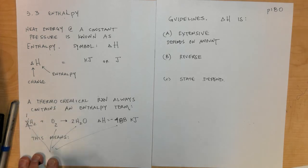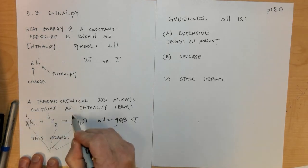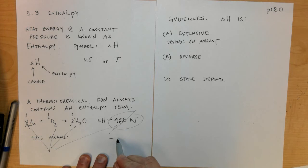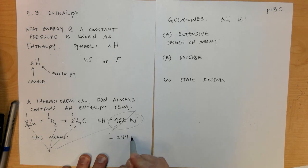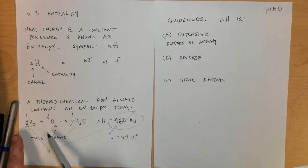It would be negative 244 kilojoules because we depend on how much we have. If we have half as much, we have half the amount of energy.